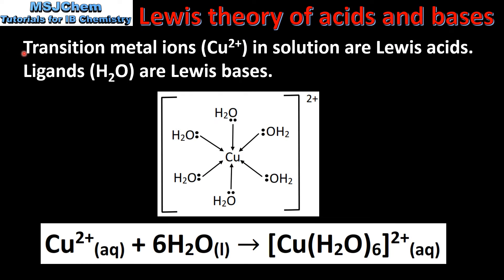Transition metal ions, such as the copper 2+ ion in solution, are Lewis acids. Ligands such as H2O are Lewis bases. Here we have an example of a complex ion formed from a copper 2+ ion and 6 water molecules, which are known as ligands.